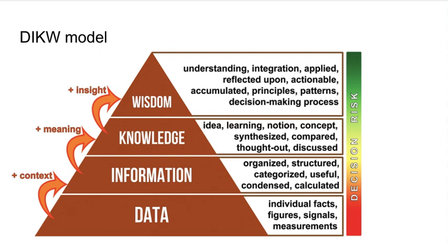Information is derived from data through the process of organizing, structuring and contextualizing it. Information provides meaning and context to data by transforming it into a more understandable and useful form. Knowledge represents the synthesized information that has been analyzed and interpreted, involving connecting and integrating various pieces of information to derive deeper insights and understand relationships.